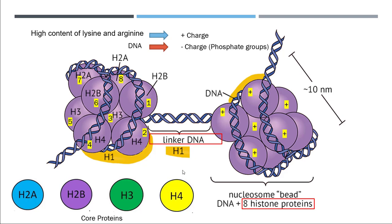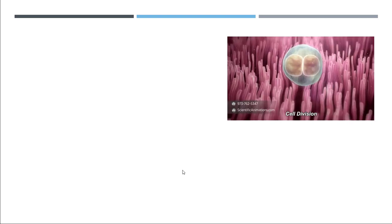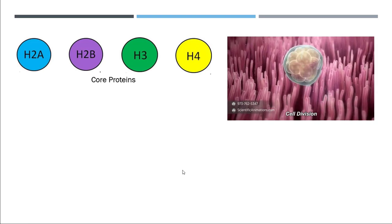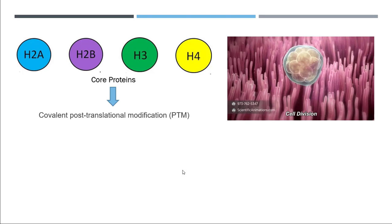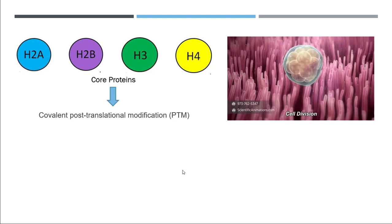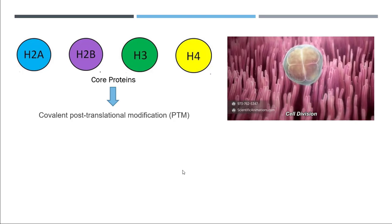The cell can divide, and during division, chromosomes or DNA take different shapes. These core proteins come in handy at that time. Core proteins have covalent post-translational modifications (PTM) that help these changes occur.